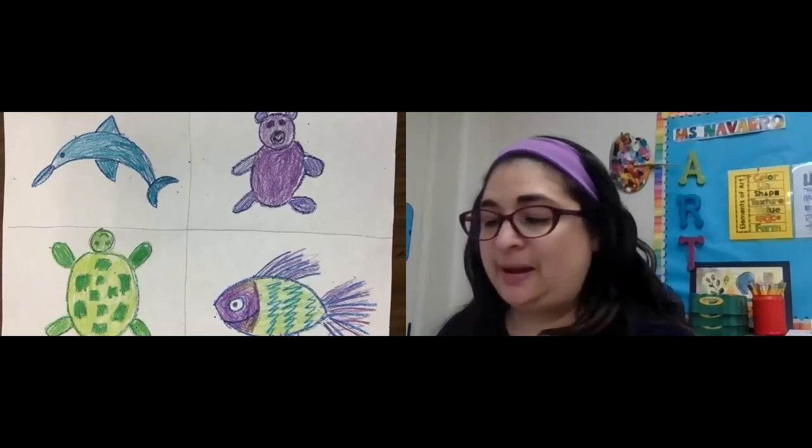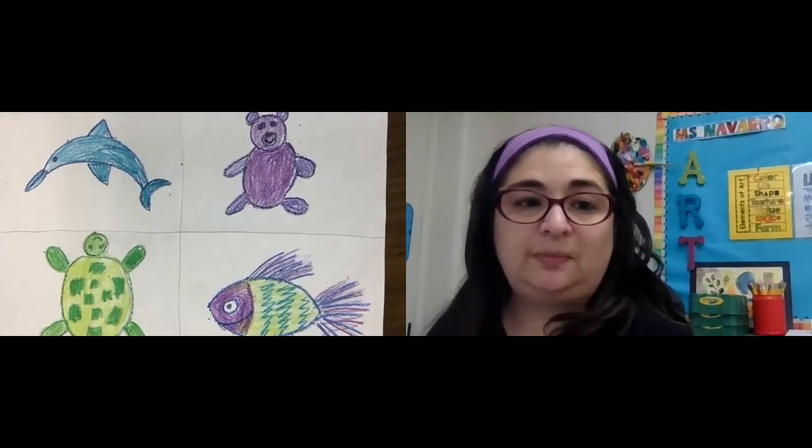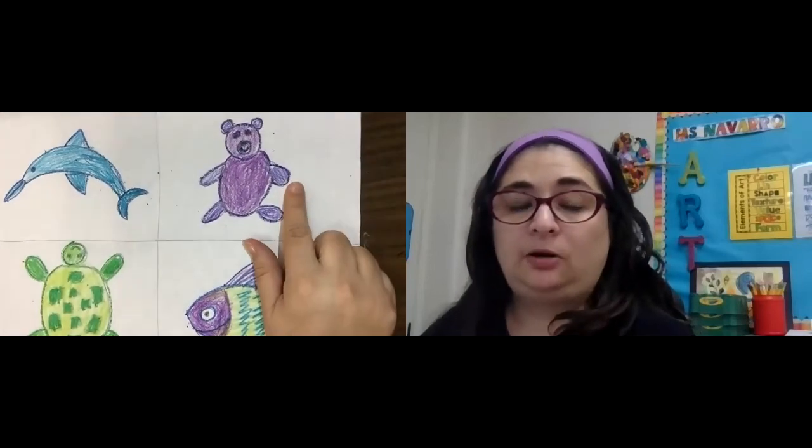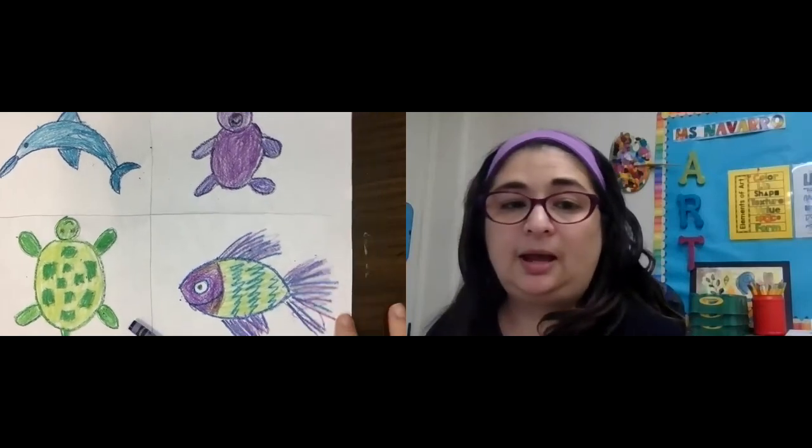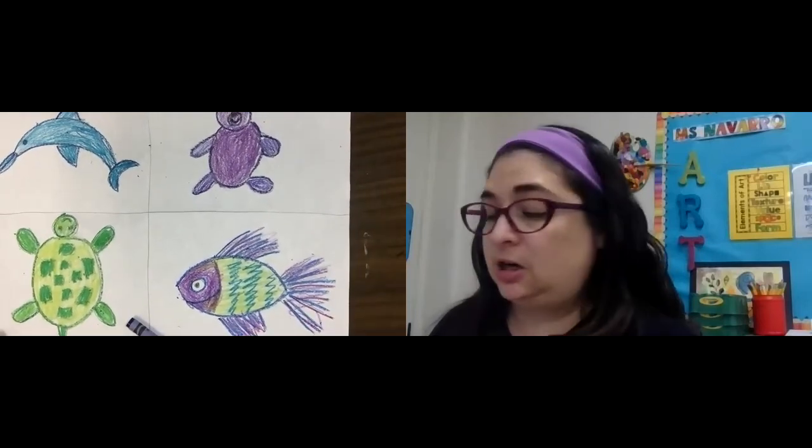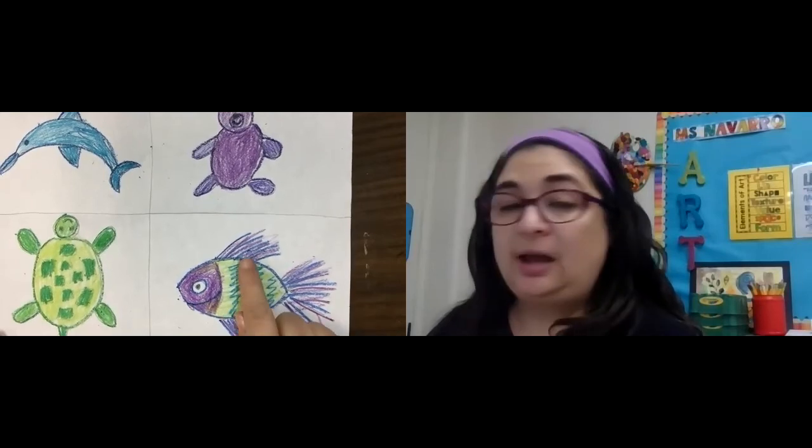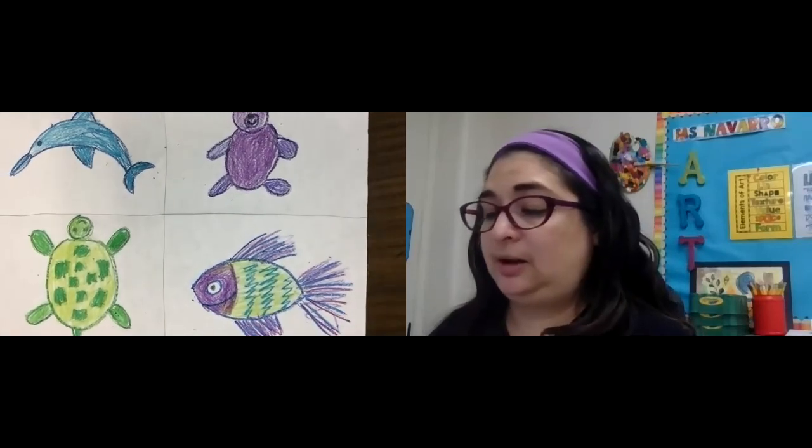Okay, boys and girls, I'm back. And as you can see, I finished coloring my four animals. So my dolphin is blue. My bear is purple. My turtle is green. And my fish, I did a combination. I used purple, green, and blue in there. So I used all three of my cool colors in there.